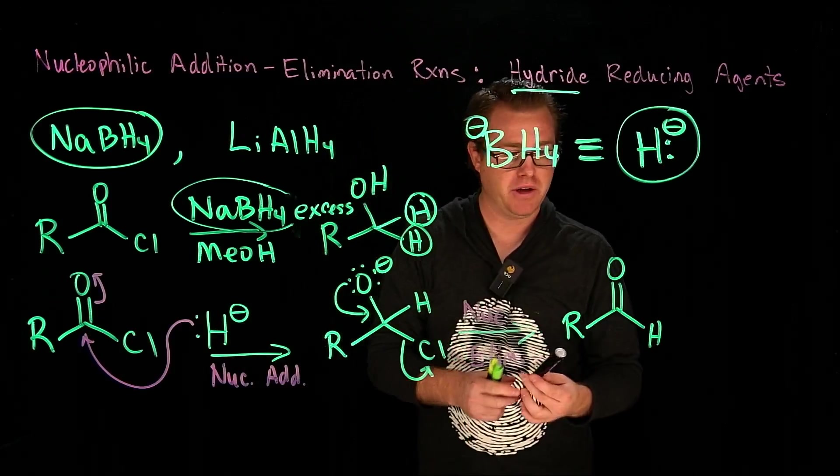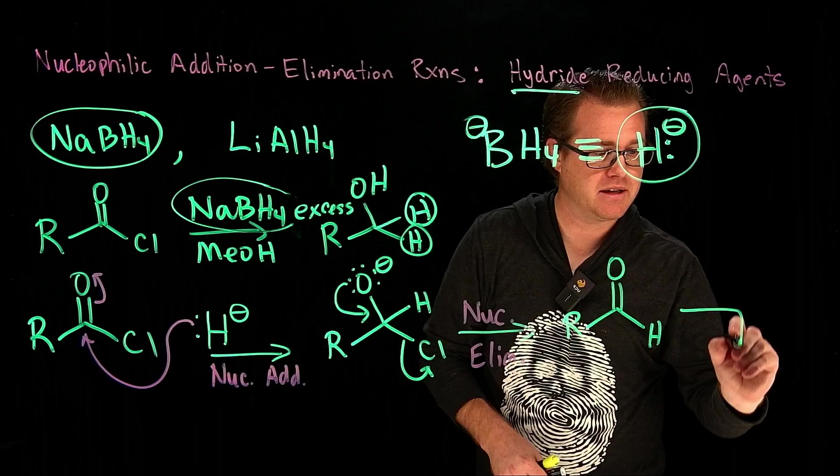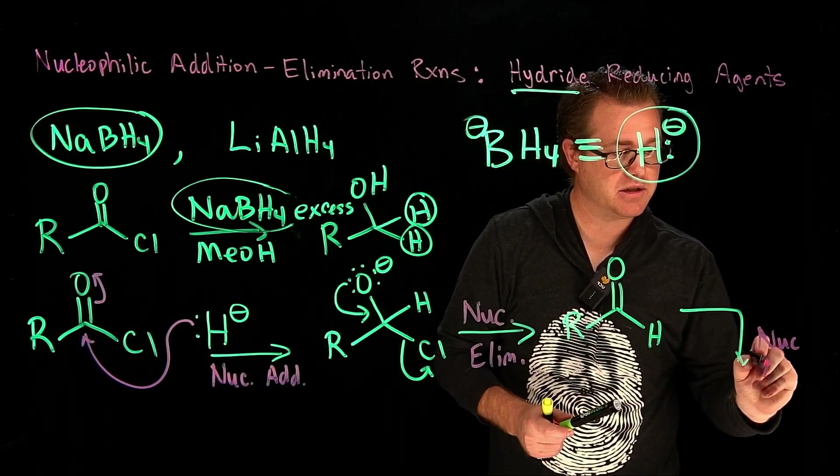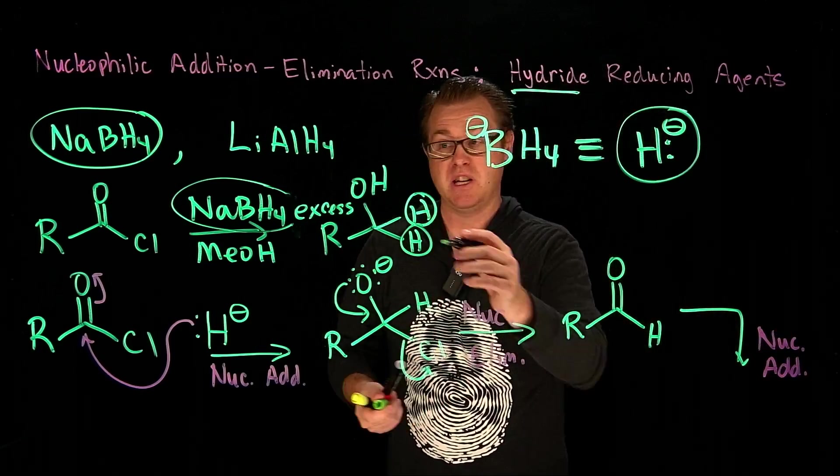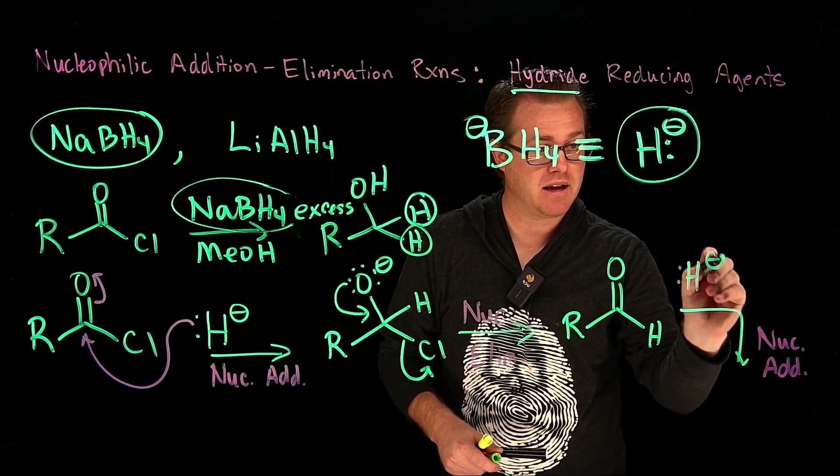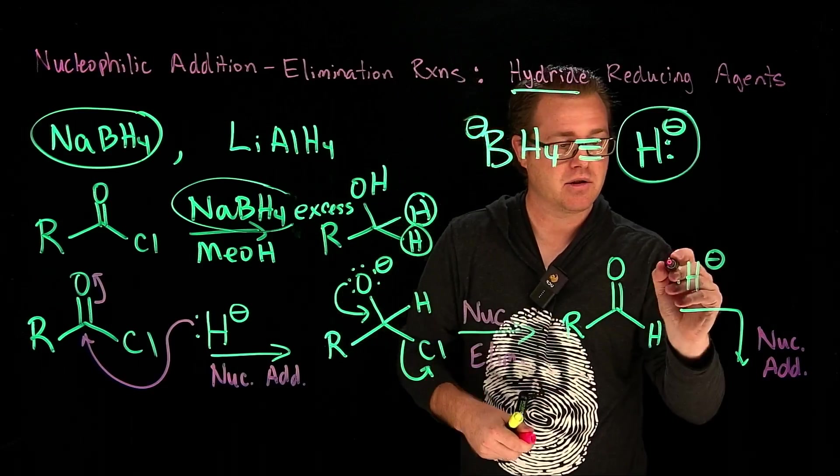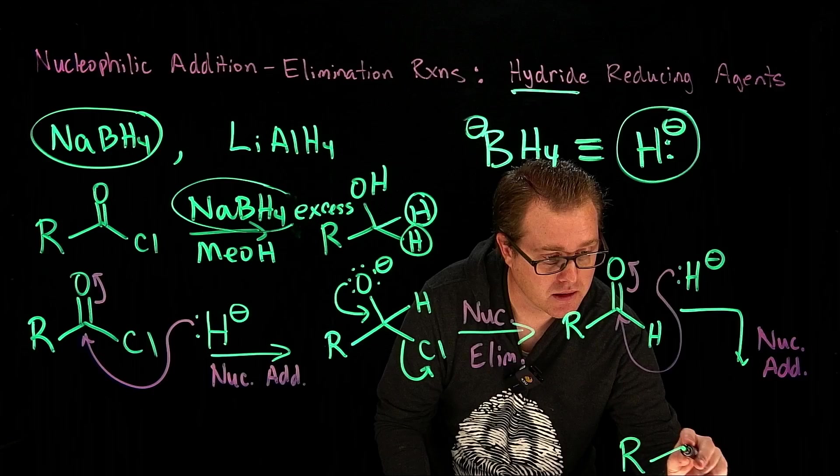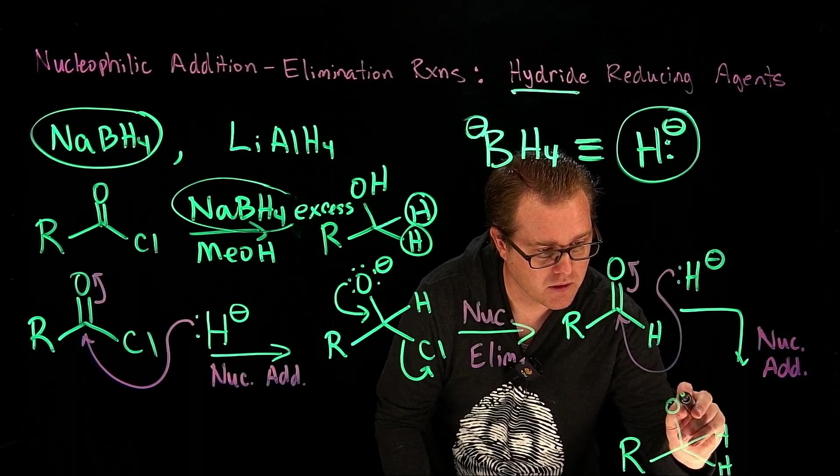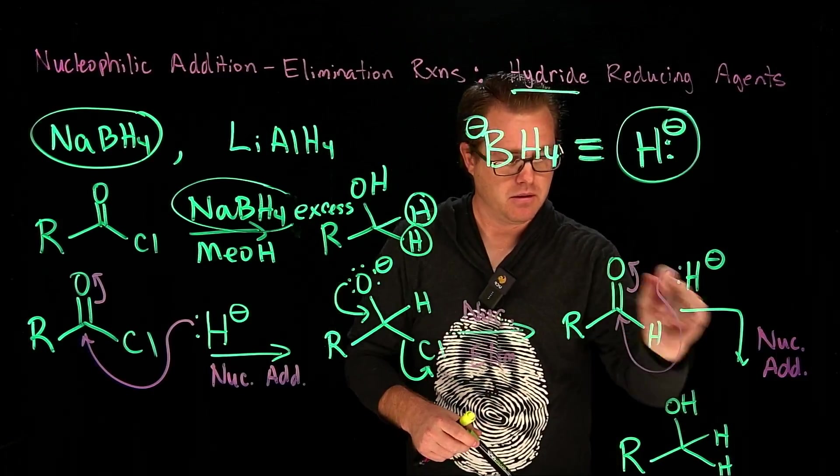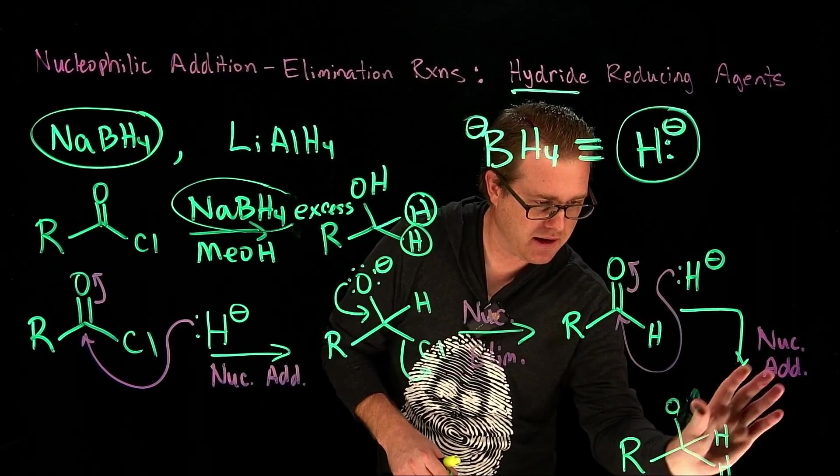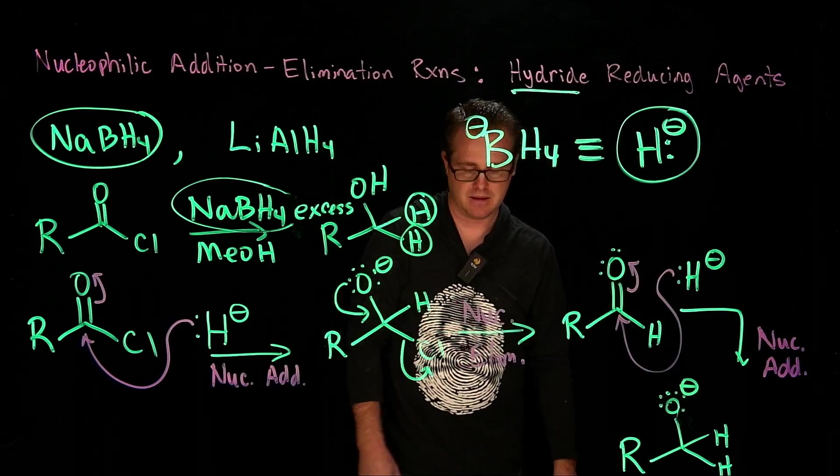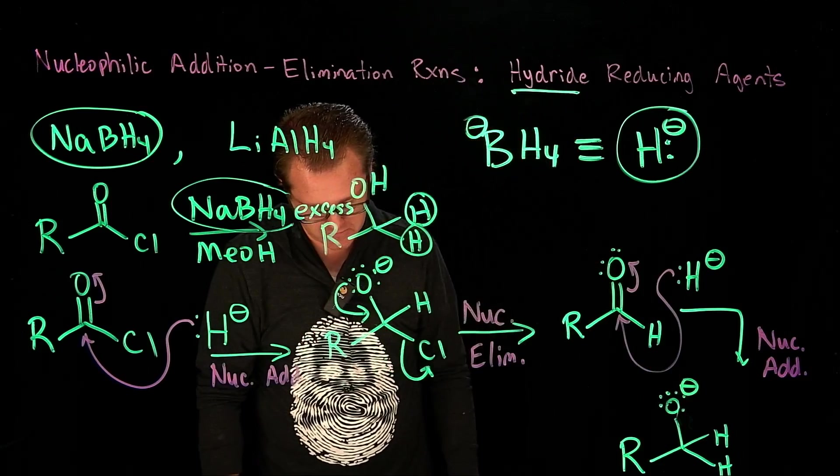So we're going to have another nucleophilic addition step. We're just going to be using another equivalent of the sodium borohydride, and I'm just going to represent it as the hydride. And that's going to come in, boom, boom. And we'll get this guy here. Like so. There's no hydrogen there. So there's only two lone pairs there, now there's three, so that has to be negatively charged, just like that.